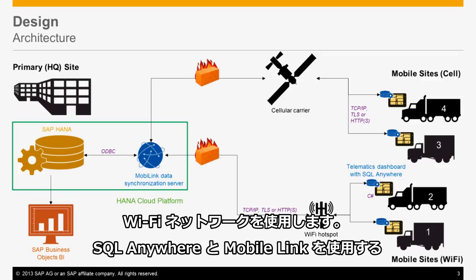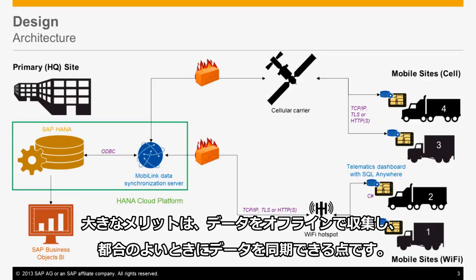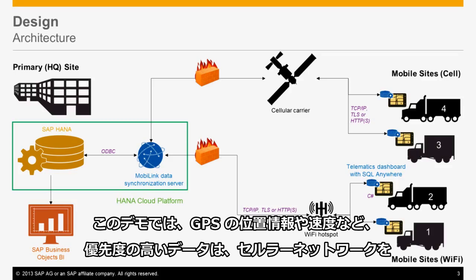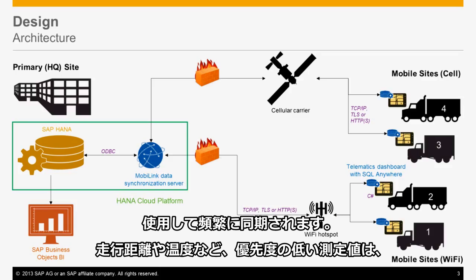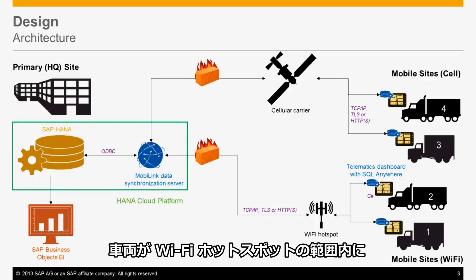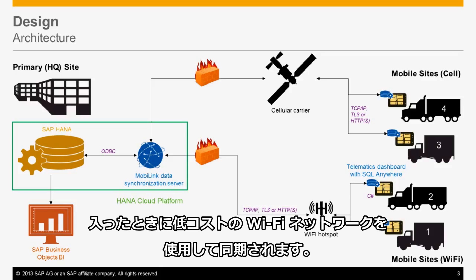A big advantage of using SQL Anywhere and MobileLink is the ability to capture data offline and synchronize it when convenient. In this demo, high priority data such as GPS location and speed is frequently synchronized to the SAP HANA backend via the cellular network. Low priority readings such as odometer and temperatures are synchronized using the low-cost WiFi network whenever the vehicles are in range of a WiFi hotspot. This method allows the company to save money by minimizing the higher cost cellular network charges.